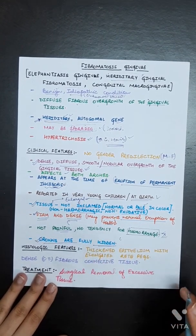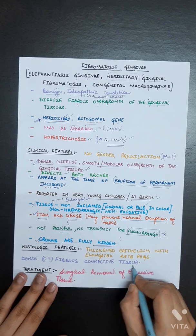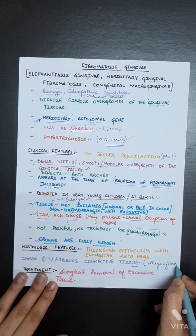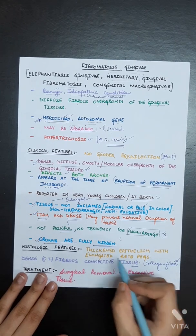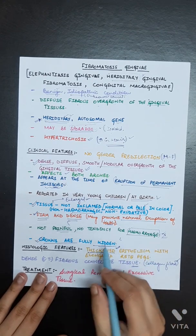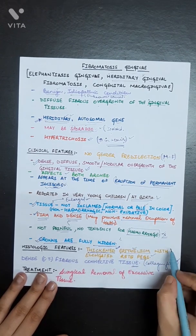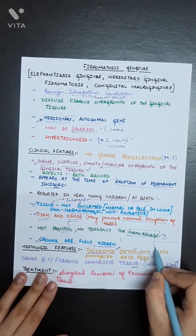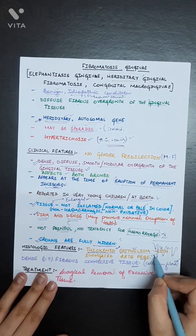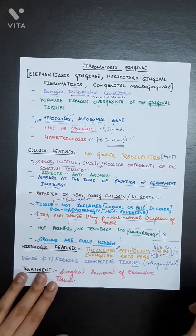The histological features of fibromatosis gingiva: as the name suggests, there will be dense fibrous connective tissue having lots of collagen fibers. The overlying epithelium will be thickened as there is overgrowth. Thickened epithelium with elongated rete pegs, so the epithelium will be thickened and the rete pegs will be elongated, with the connective tissue being very dense with a lot of collagen fibers.